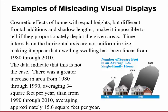Making it appear that dwellings have been linear from 1980 to 2010, which is not true. The data indicates that this is not. There was a greater increase in area from 1980 to 1990, averaging 34 square feet per year, than from 1990 to 2010, averaging approximately 15.6 square feet. Also, if you look at this shadow and this shadow, the size to go from this square feet to this square feet is less than double. But the shadow is more than double of this one. So just not appropriate scaling.